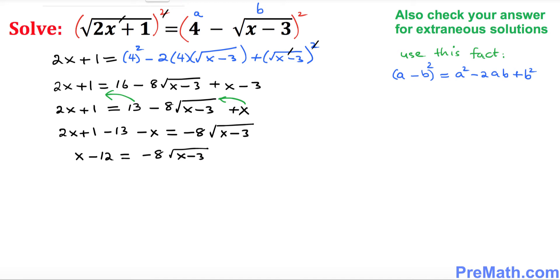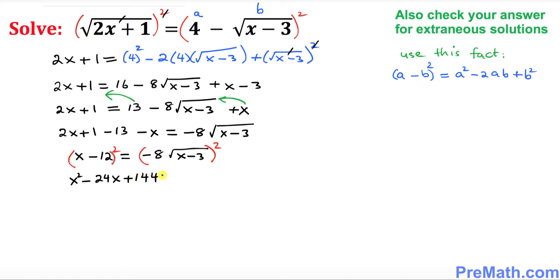Now we square both sides again to undo the square root on the right hand side. Squaring the left side, (x minus 12)², gives us x² minus 24x plus 144. Squaring the right side, (negative 8)² is 64, times (x minus 3).